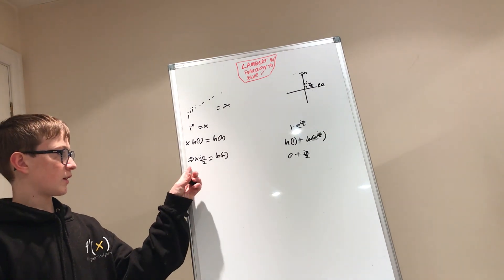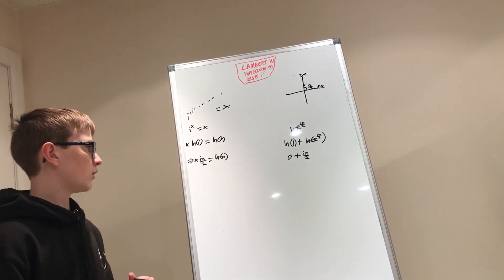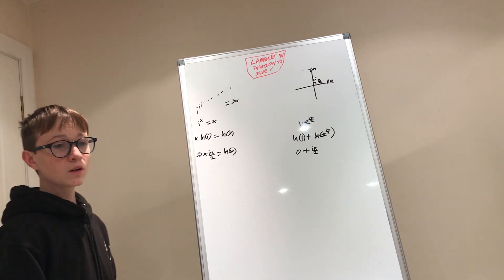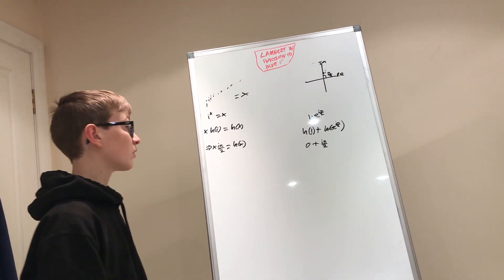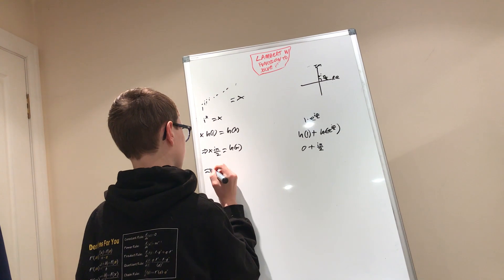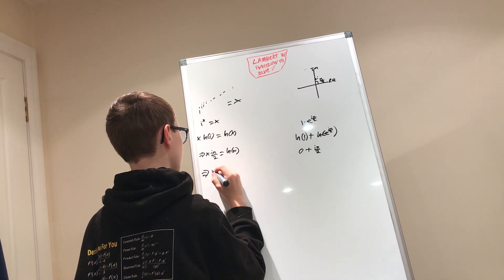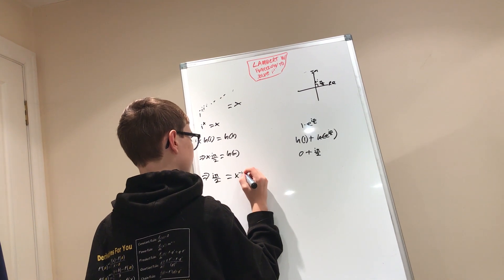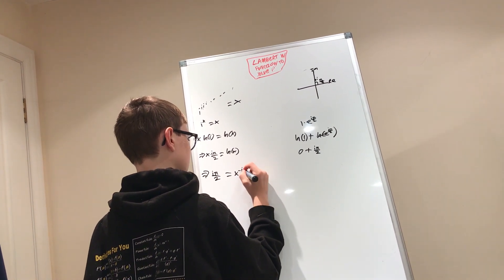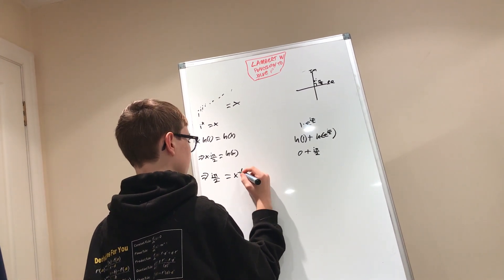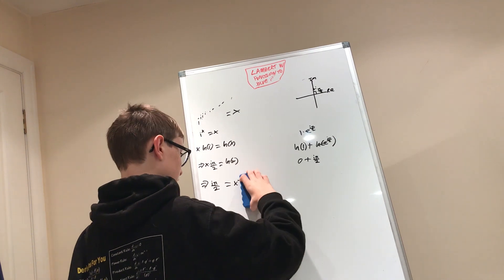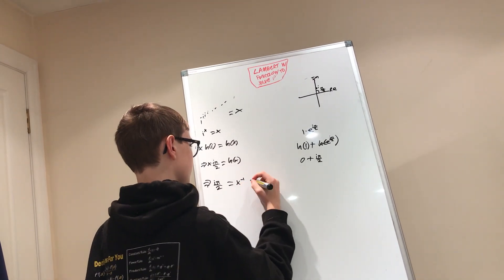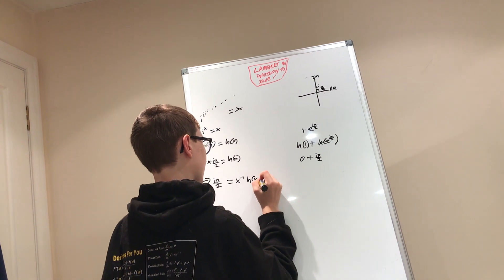To get all of the X's on one side, we'll multiply both sides by X to the power of negative one, or one over X. So this is the same as saying i·pi over two equals X to the power of negative one times the natural log of X.